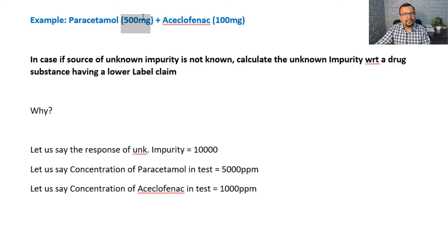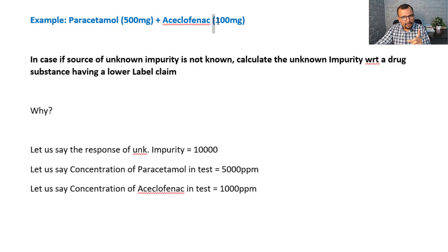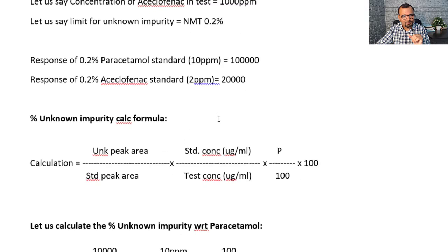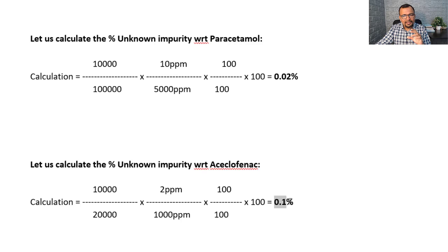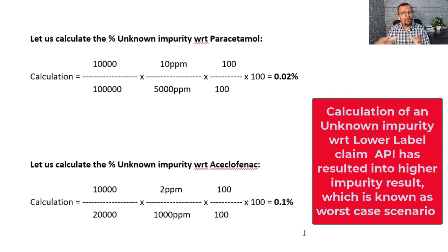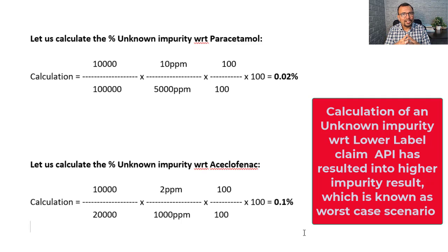The label claim of paracetamol is higher compared to aciclophenac. When the same unknown impurity is calculated using aciclophenac — the drug substance with the lower label claim — and substituting aciclophenac's details into the same formula, the result for the unknown impurity is now 0.1%. This clearly demonstrates why the lower label claim drug substance should be used when calculating an unknown impurity.